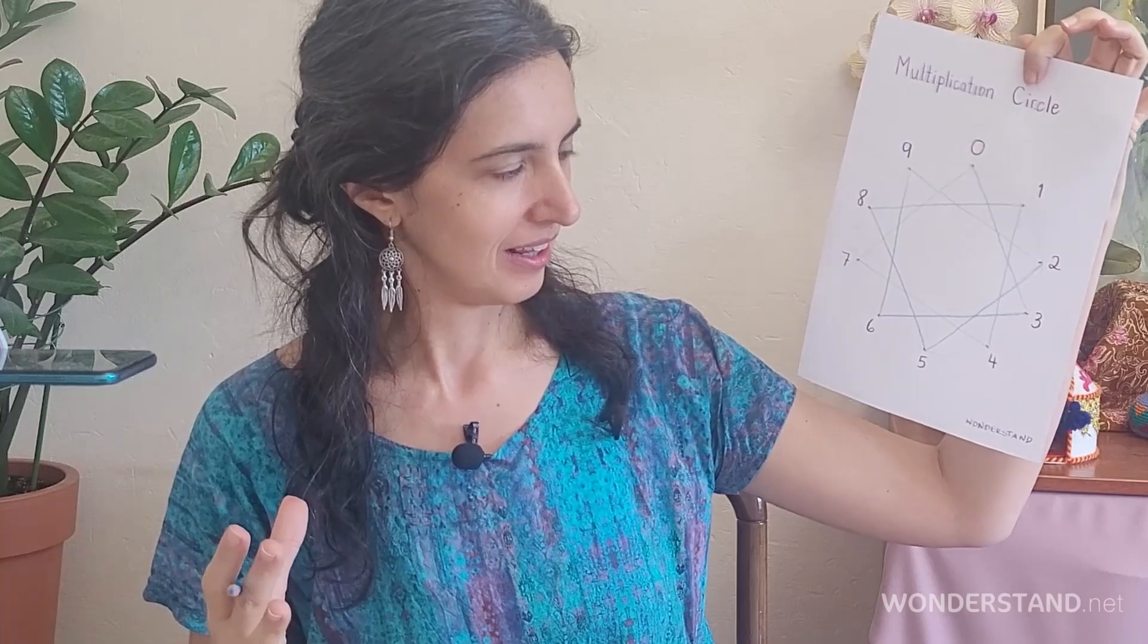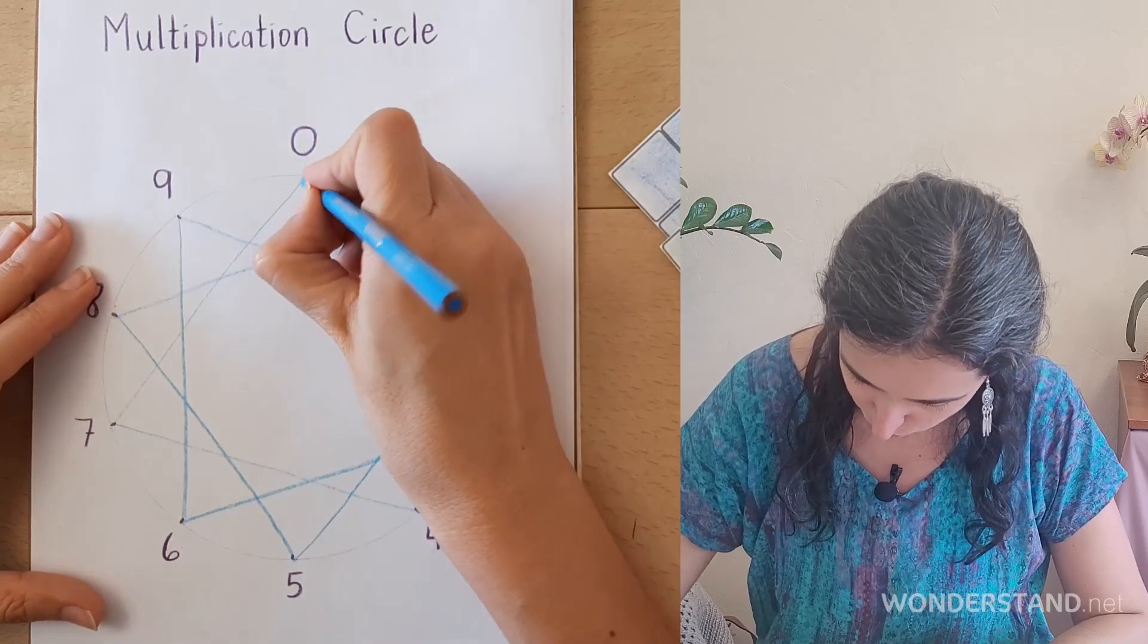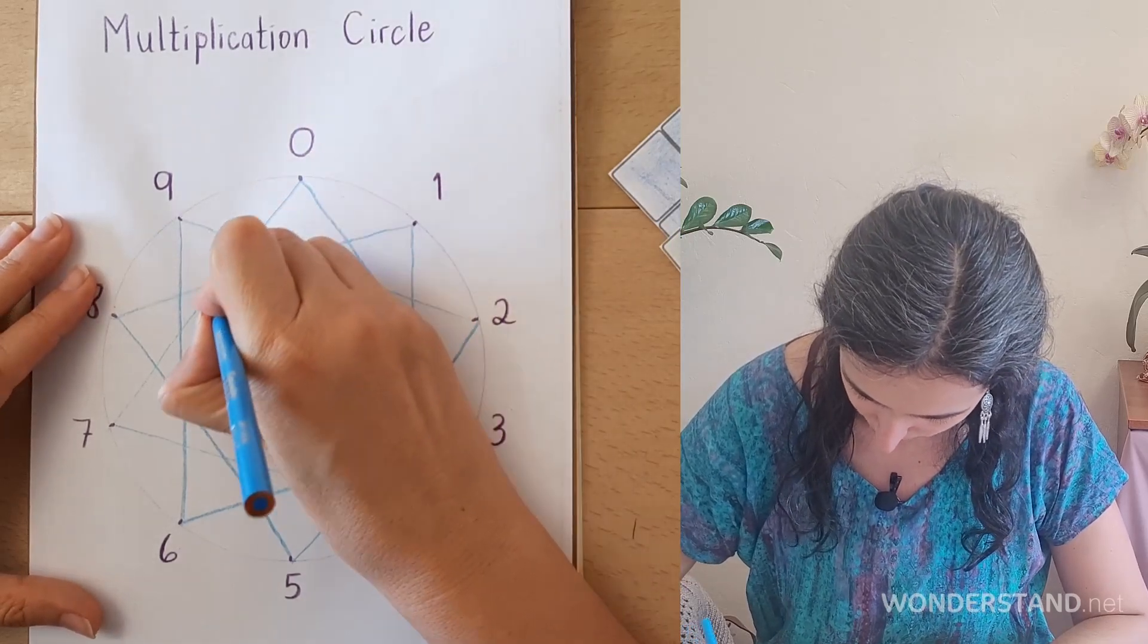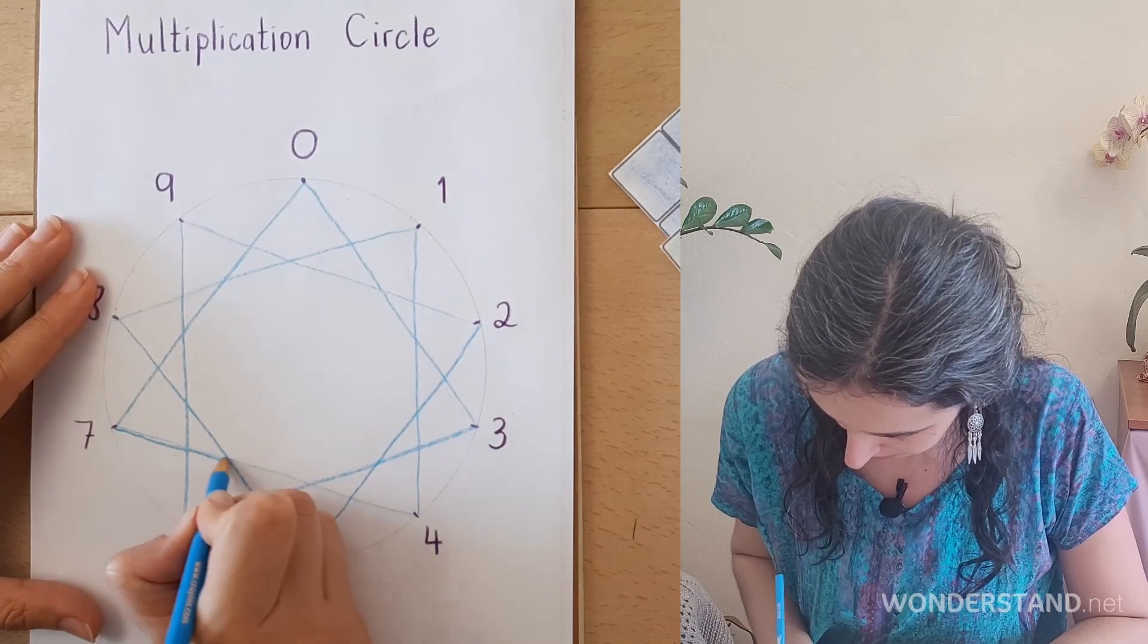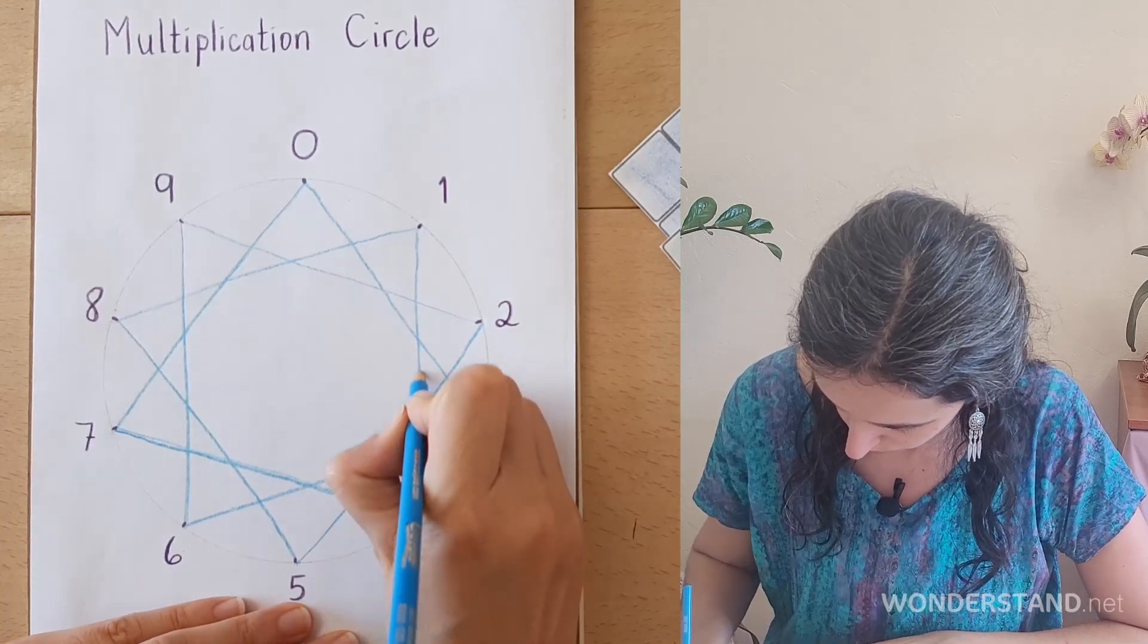There is a shape that has been revealed. Oh behold, there is a shape linked to the 7 times table living inside this multiplication circle. Let's first trace it again as we admire the beauty, the beauty of this shape. And as you go over.